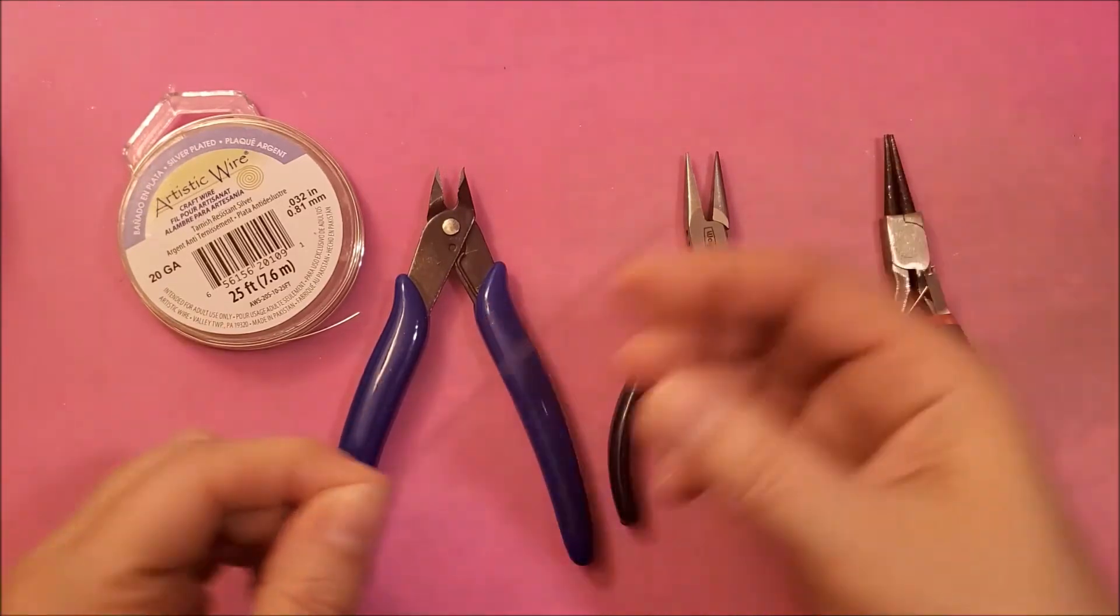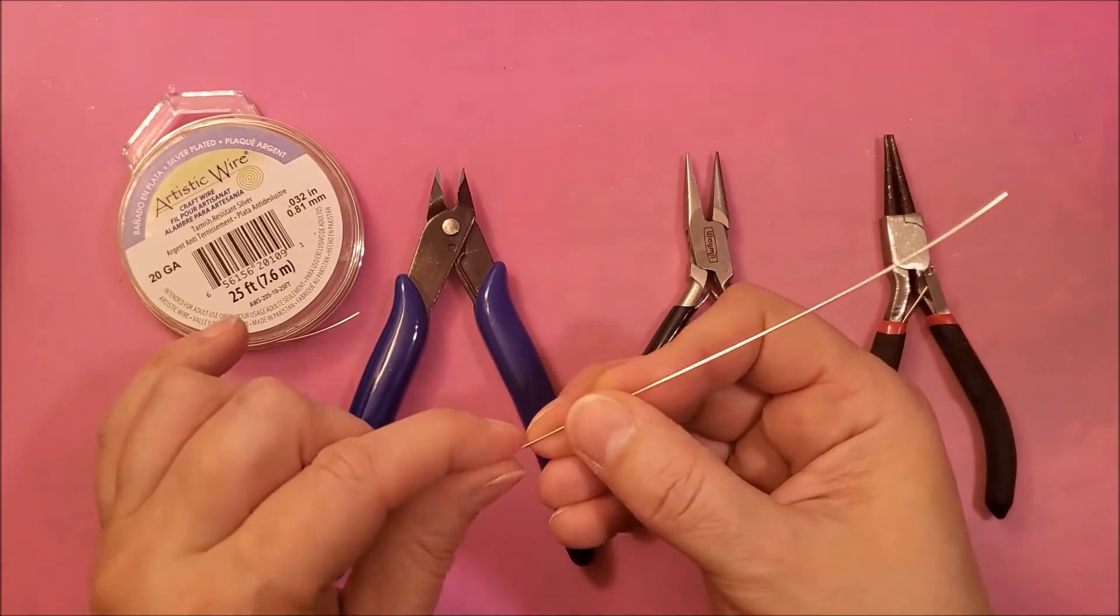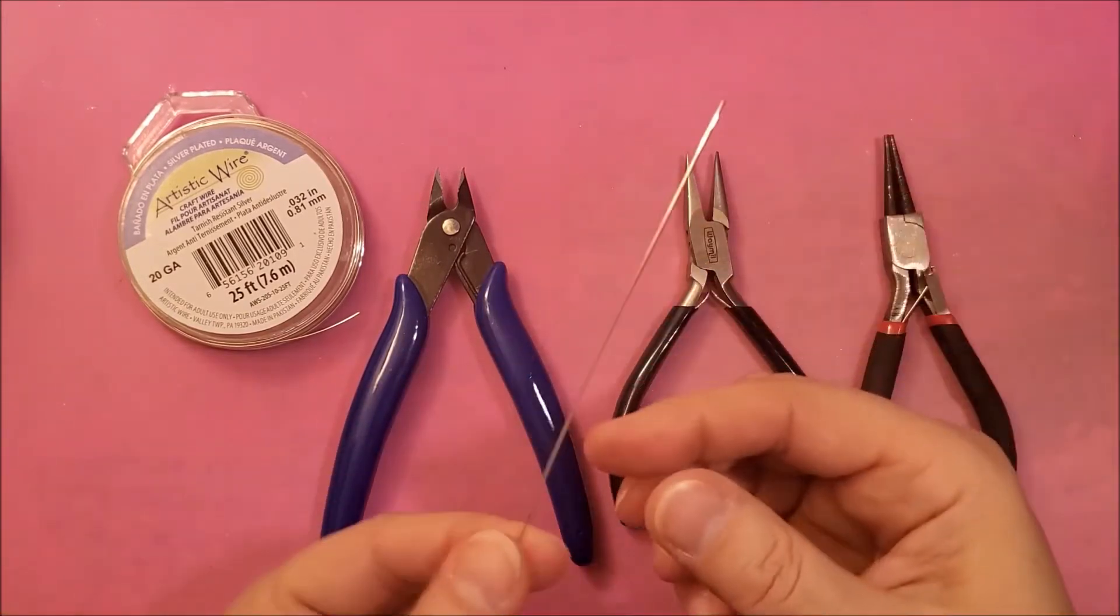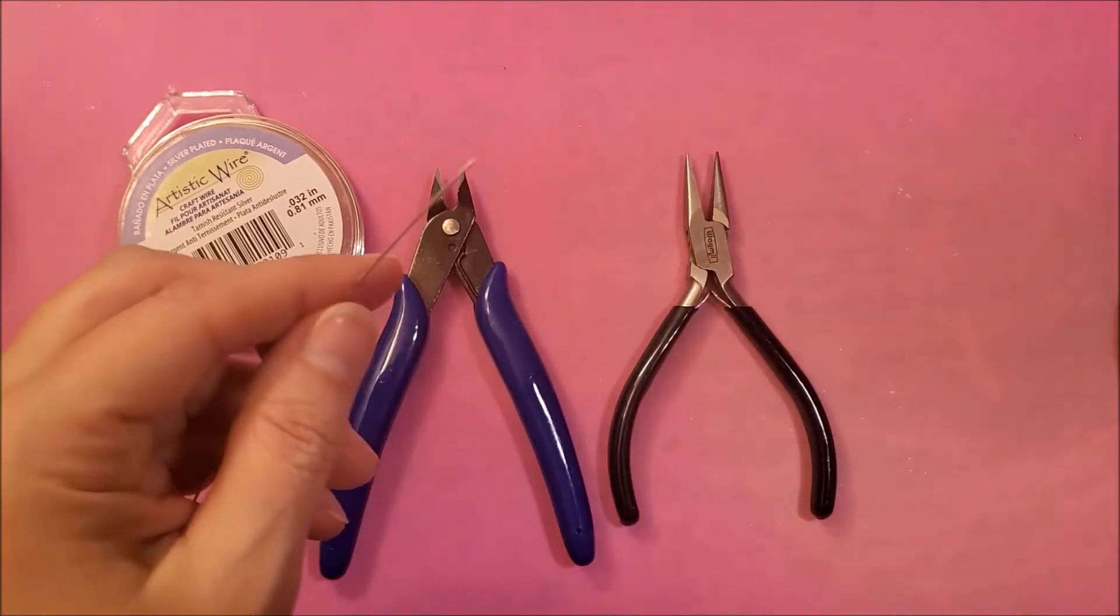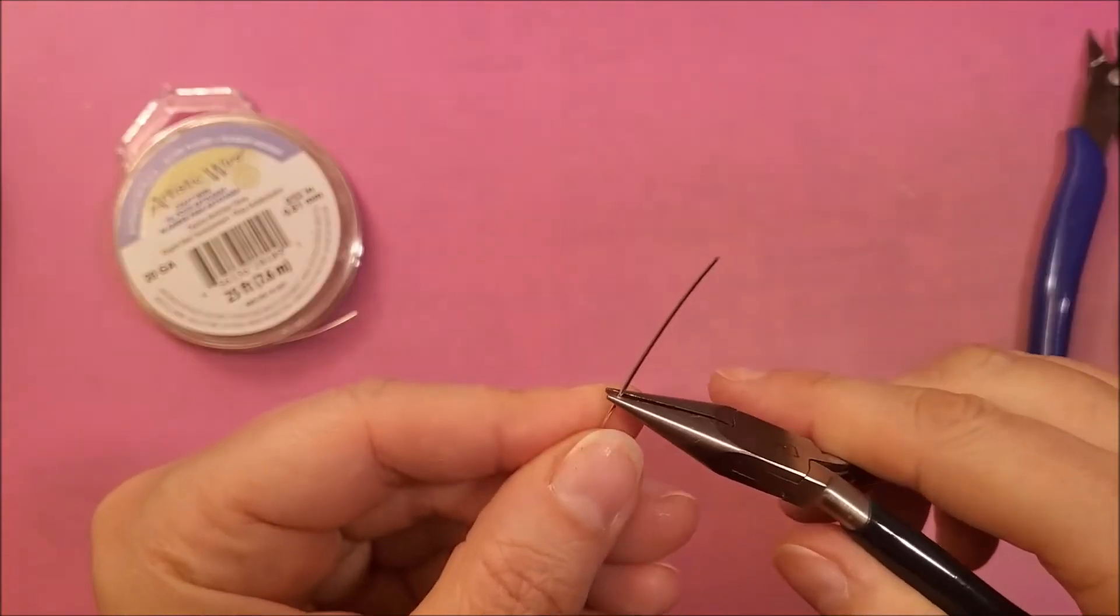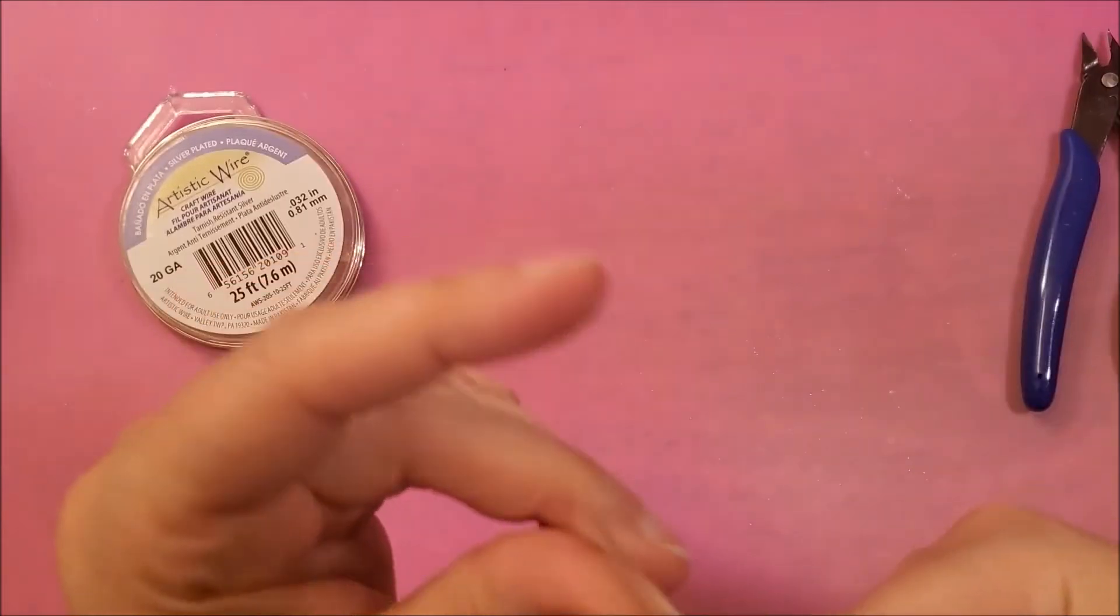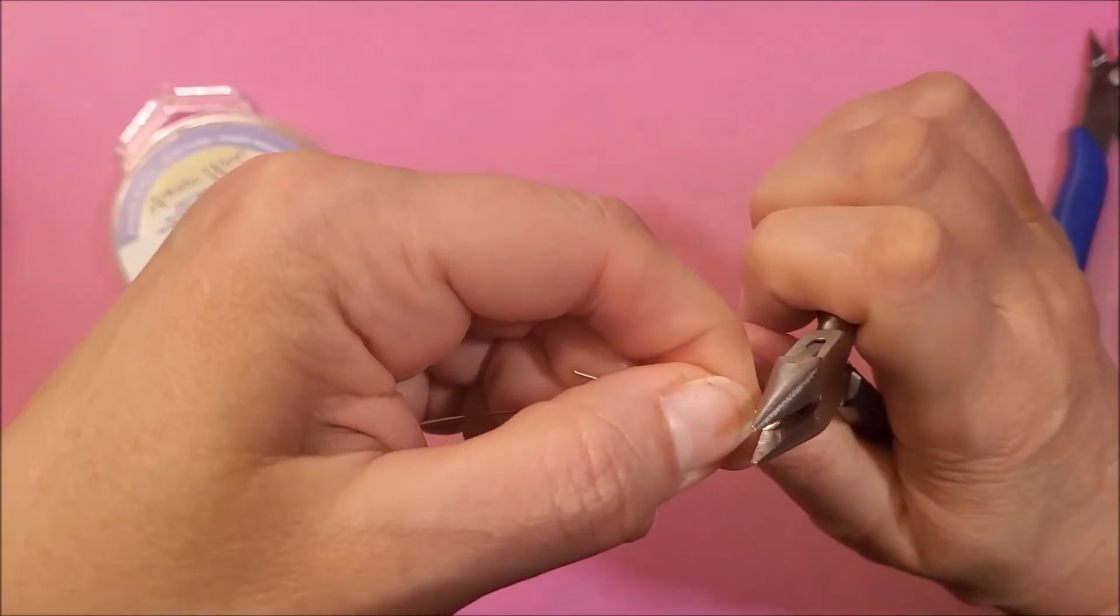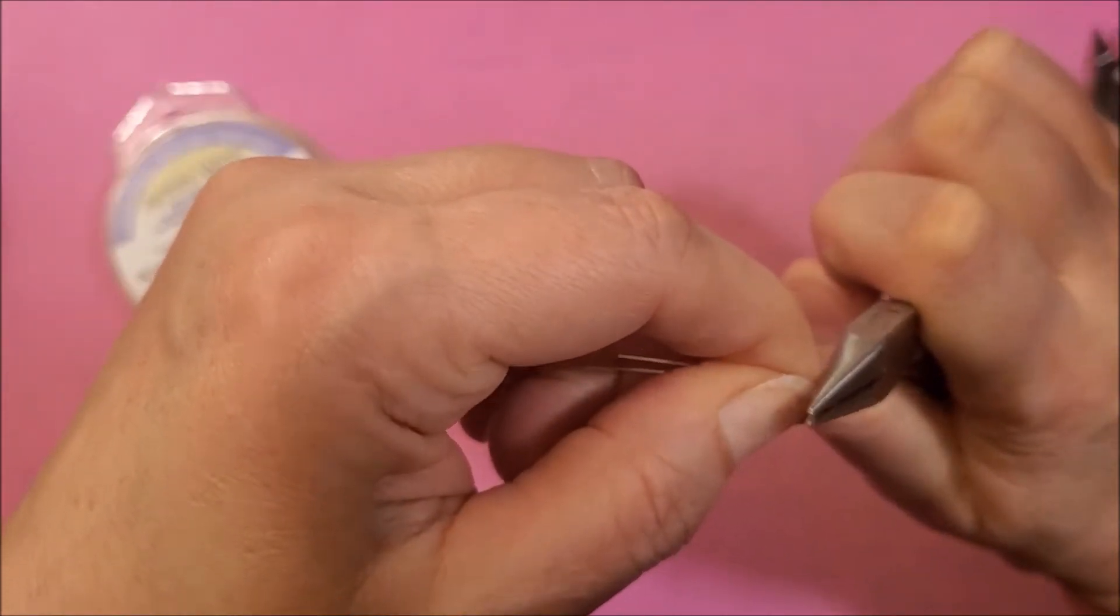We're just going to do these as a quick video and then you can practice. Then the next video will show you what I'm actually using them for. First take your six inch piece of 20 gauge wire and go down about an inch.